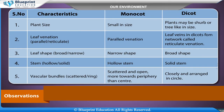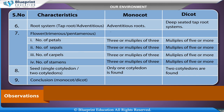Observations: Compare the following characteristics for monocot and dicot plants — plant size, leaf venation (parallel or reticulate), leaf shape (broad or narrow), stem (hollow or solid), vascular bundles (scattered or in a ring), root system (taproot or adventitious), flower type (trimerous or pentamerous), number of petals, sepals, carpels, and stamens, and seed (single cotyledon or two cotyledons). Record your conclusion: monocot or dicot.